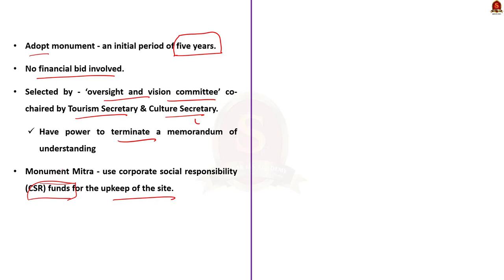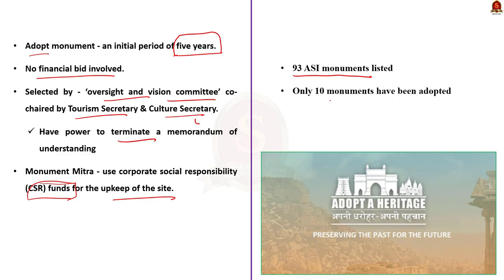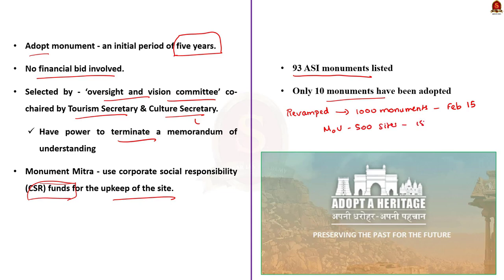There is no finance bid involved; the corporate sector is expected to use CSR funds for the upkeep of the site. Monument Mitras get limited visibility on the site premises and on the Incredible India website. The Adopt a Heritage scheme is a non-revenue generating project. The government put up a list of over 93 ASI monuments, but only 10 have been adopted so far. The government has now revamped the scheme, planning to conclude partnerships for as many as 1,000 monuments, with a target to sign MOUs for 500 sites before August 15th. The Cultural Ministry is projecting India as a cultural superpower during the year-long G20 presidency.